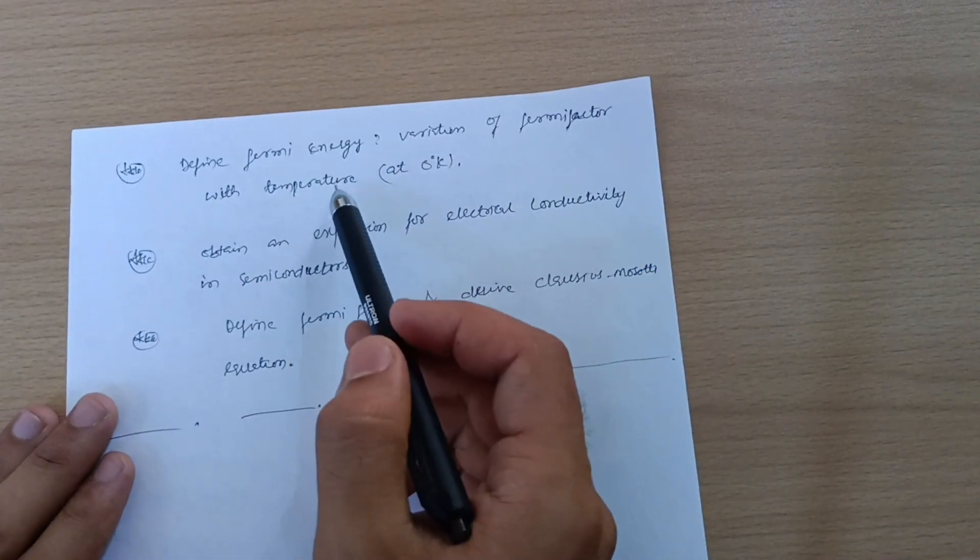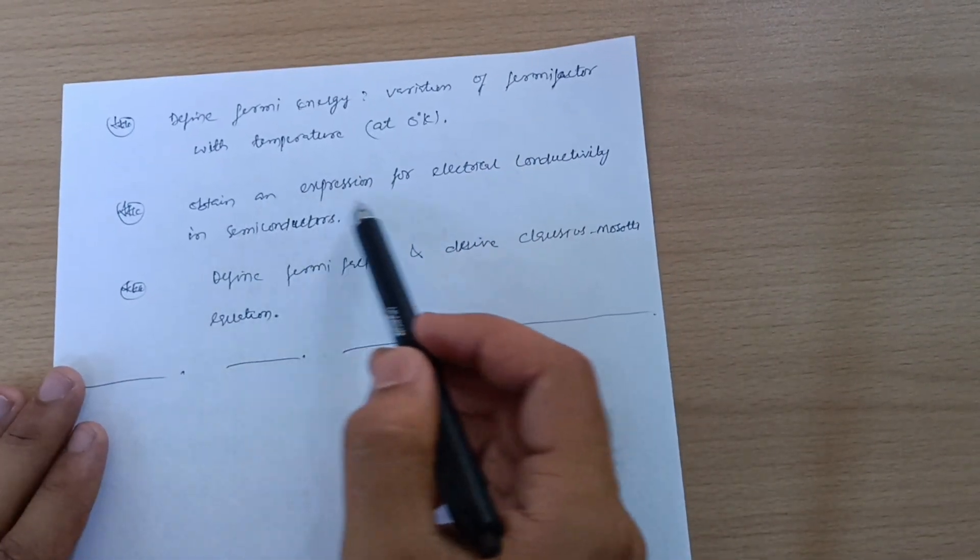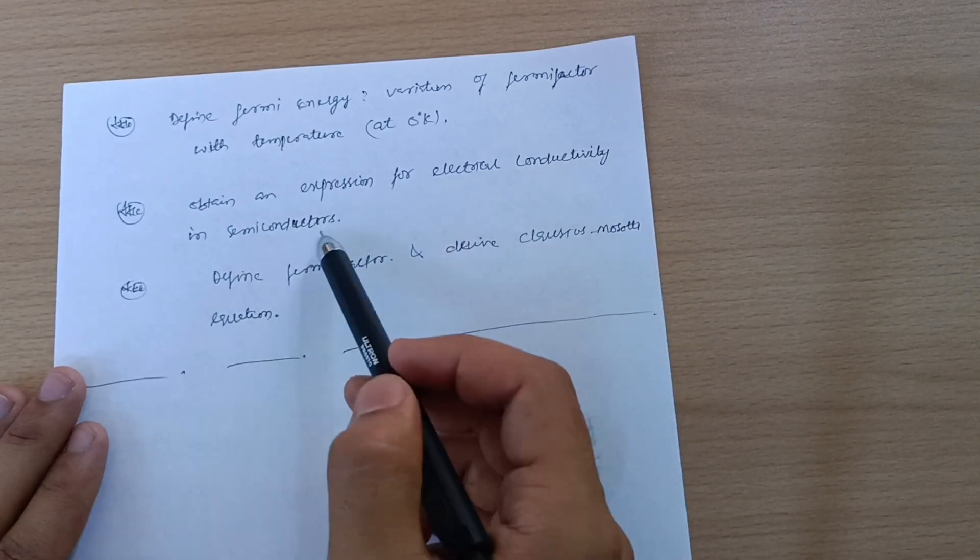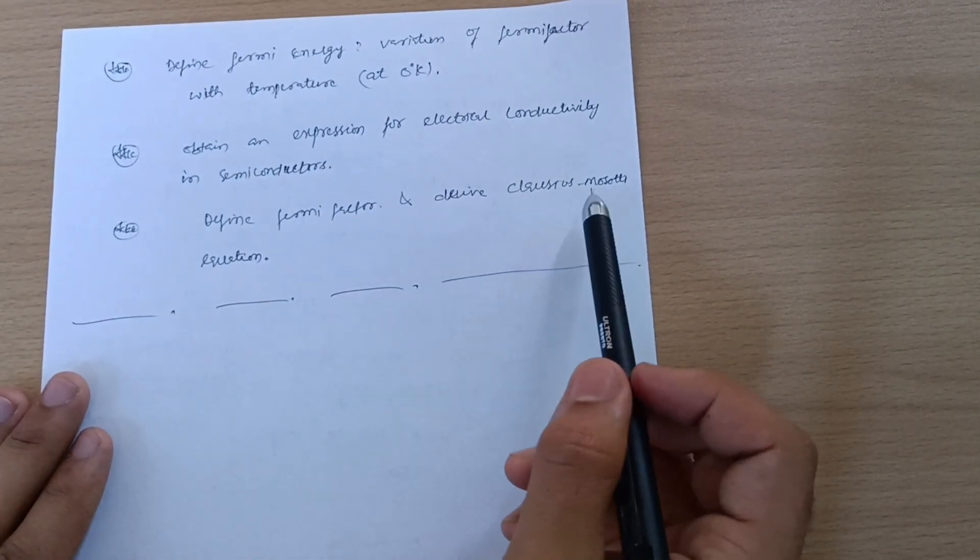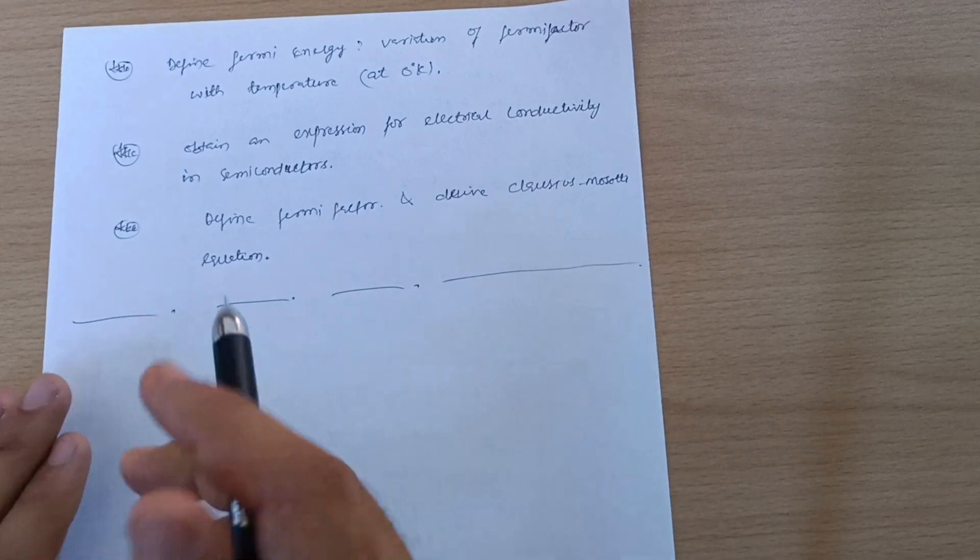Next three questions: Define Fermi energy variation of Fermi factor with temperature at zero Kelvin. Obtain an expression for electrical conductivity in semiconductors. Define Fermi factor and derive Clausius-Mossotti equation. This is all about these questions. If you prefer, you can easily pass the physics subject with flying colors.